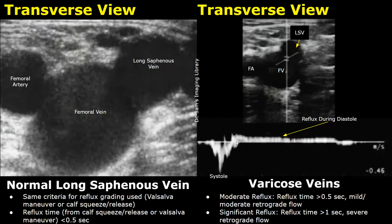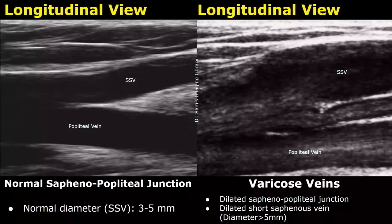In severe cases of varicose veins, you may also find reflux during diastole. There is a prolonged reflux seen in this case at the saphenofemoral junction. Here is an image of a normal saphenopopliteal junction. This is the short saphenous vein — the normal diameter of the short saphenous vein can be between 3 to 5 mm approximately.